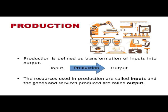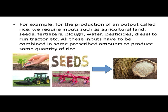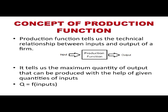Let us first understand the concept of a production function. Production is defined as transformation of inputs into output. The resources used in production are called inputs and the goods and services produced are called output. For example, for the production of rice, we require inputs such as agricultural land, seeds, fertilizers, plough, water, pesticides, diesel to run the tractor, etc. All these inputs have to be combined in some prescribed amounts to produce some quantity of rice. The production function tells us the technical relationship between inputs and output of a firm or a producer.